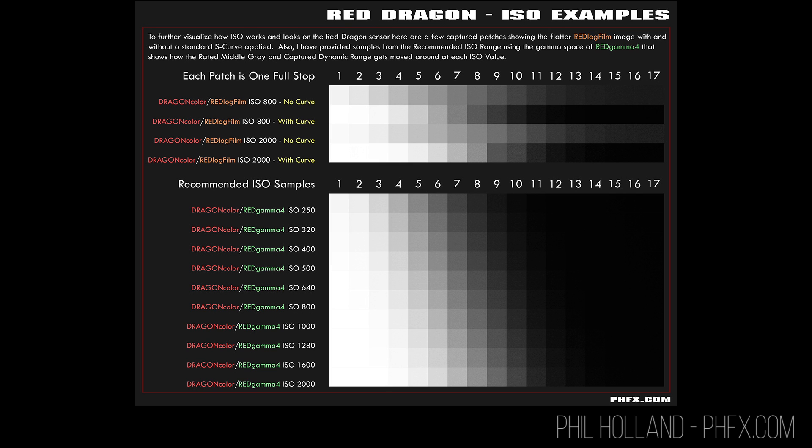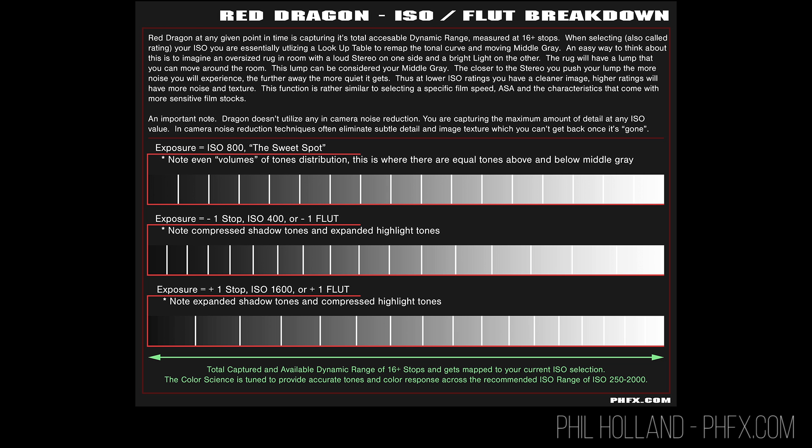Here you can see exactly how ISO works and looks on the Red Epic Dragon. These were actually captured images thanks to Phil Holland. You can clearly see that with the lower ISO, the dynamic range is more split up between the shadows, whereas when you use a higher ISO, the dynamic range is split up more in the highlights.